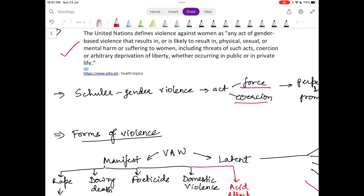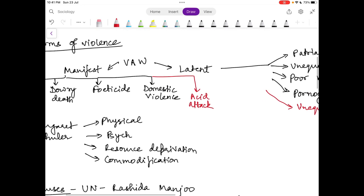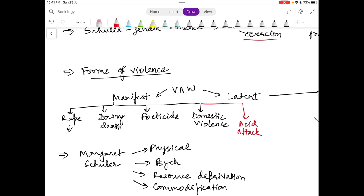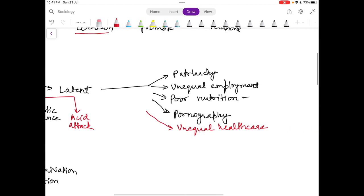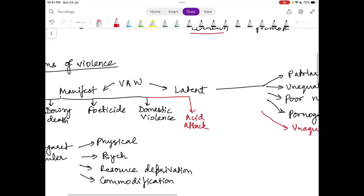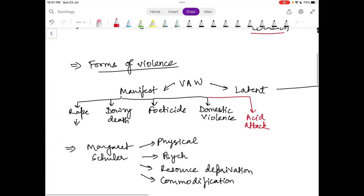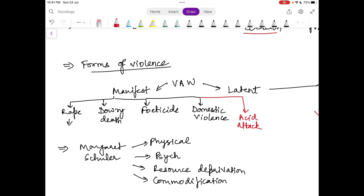Once we have covered the definition of violence, we will now move on to the forms of violence. Nitin Sanghwan divides violence against women into two forms: manifest and latent. Manifest violence can be rape, dowry death, feticide, domestic violence, and latent violence includes forms like unequal nutrition and health care.